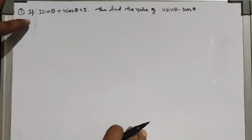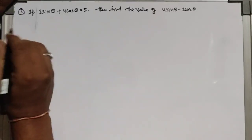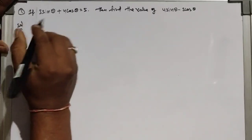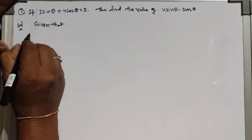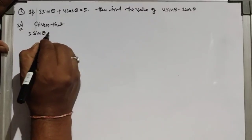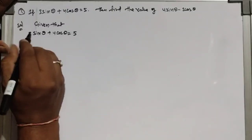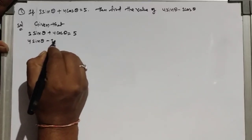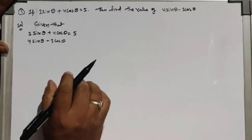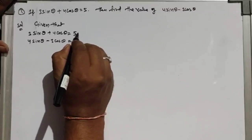The first question: if 3sinθ + 4cosθ = 5, find the value of 4sinθ - 3cosθ. Given that 3sinθ + 4cosθ = 5, we need to find the value of 4sinθ - 3cosθ. Let's take this unknown value as x. This is equation 1, and the expression equal to x is equation 2.